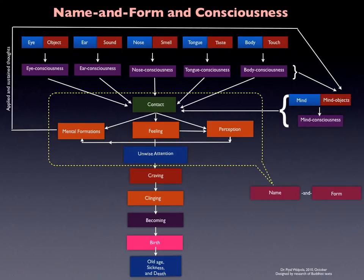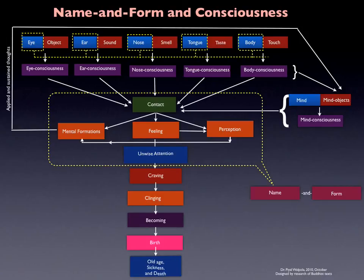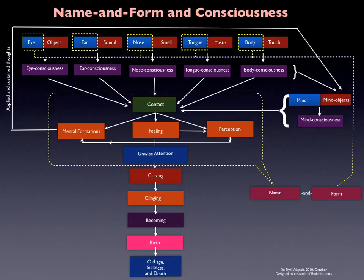In the model you can see the five things: contact, feeling, mental formations, perception and attention as the name; and the eye, ear, nose, tongue and body as the form. What is shown in purple are all the consciousnesses, and you can see that consciousness is sandwiched between name and form. If you pull out consciousness, name and form cannot sustain. Equally, if you take out name and form, consciousness cannot survive — they are closely interlinked and interdependent.